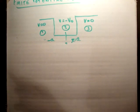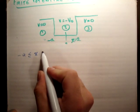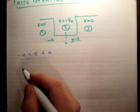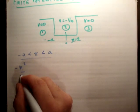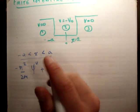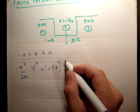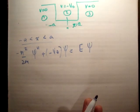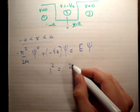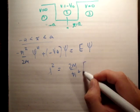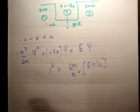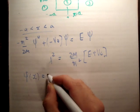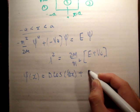Now we need to solve the Schrödinger equation inside the well, for −a ≤ x ≤ a. Here we do have a potential term, so the Schrödinger equation is −ℏ²/(2m)·ψ'' + (−V₀)·ψ = E·ψ. Defining a new constant L² = (2m/ℏ²)(E + V₀) and solving the resulting second-order linear ODE, we get ψ(x) = D·cos(kx) + E·sin(kx).